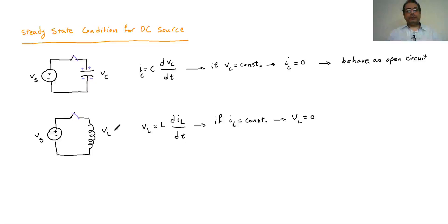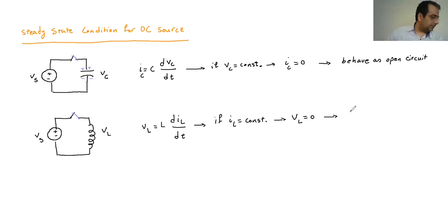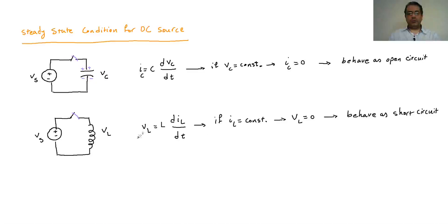If it's in the steady-state condition, the current is not going to change. If the current is not changing, the voltage across the inductor becomes zero. When the voltage is zero, it behaves like a single wire — that's where we have voltage equal to zero. So it behaves as a short circuit. In other words, in steady-state I can just replace the inductor with a single wire.